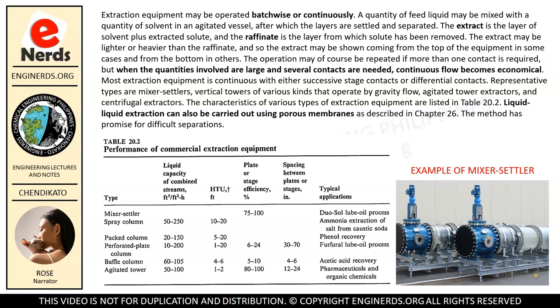Extraction equipment may be operated batch-wise or continuously. A quantity of feed liquid may be mixed with a quantity of solvent in an agitated vessel, after which the layers are settled and separated. The extract is the layer of solvent plus extracted solute, and the raffinate is the layer from which solute has been removed. The extract may be lighter or heavier than the raffinate, and so the extract may be shown coming from the top of the equipment in some cases and from the bottom in others.